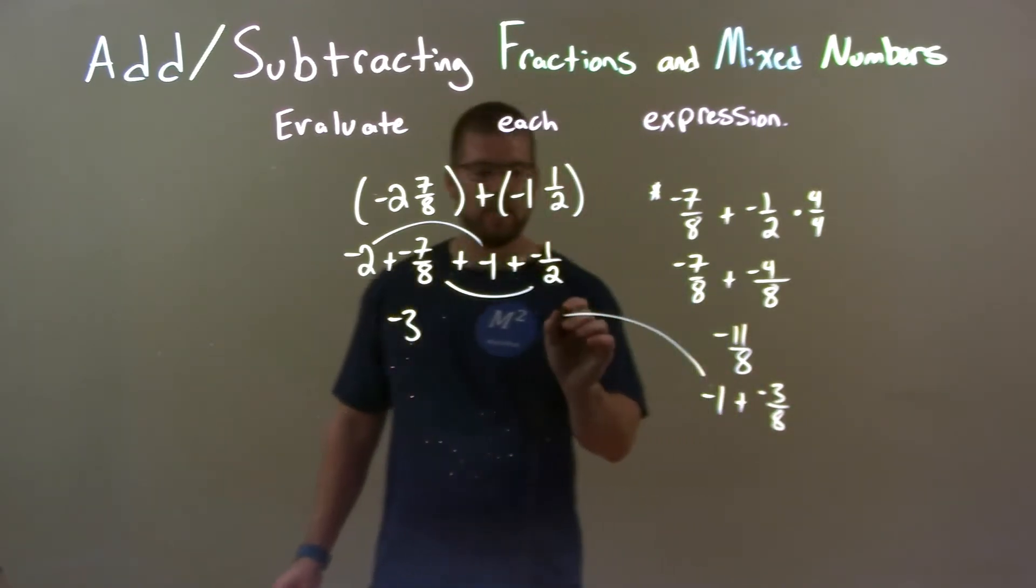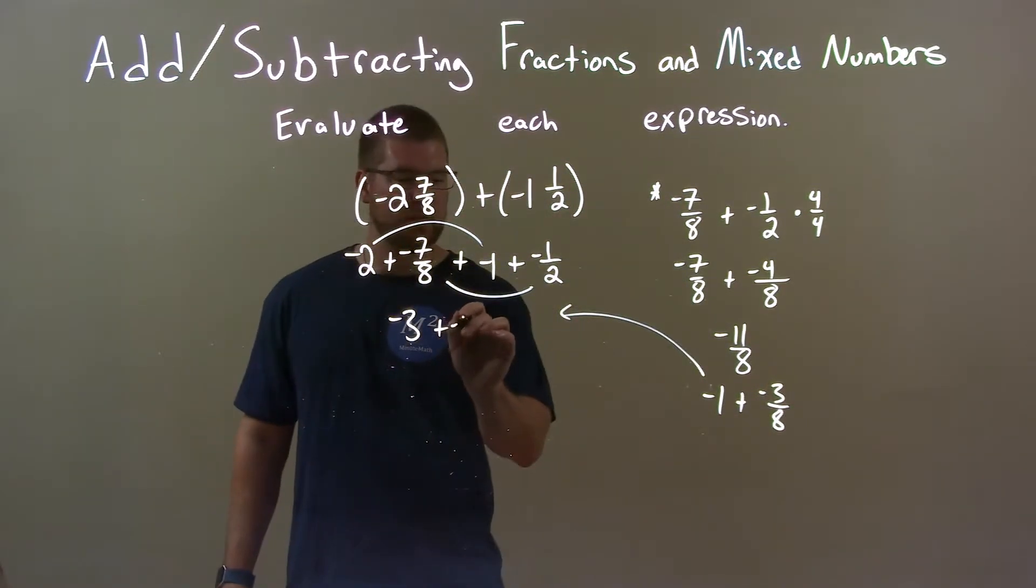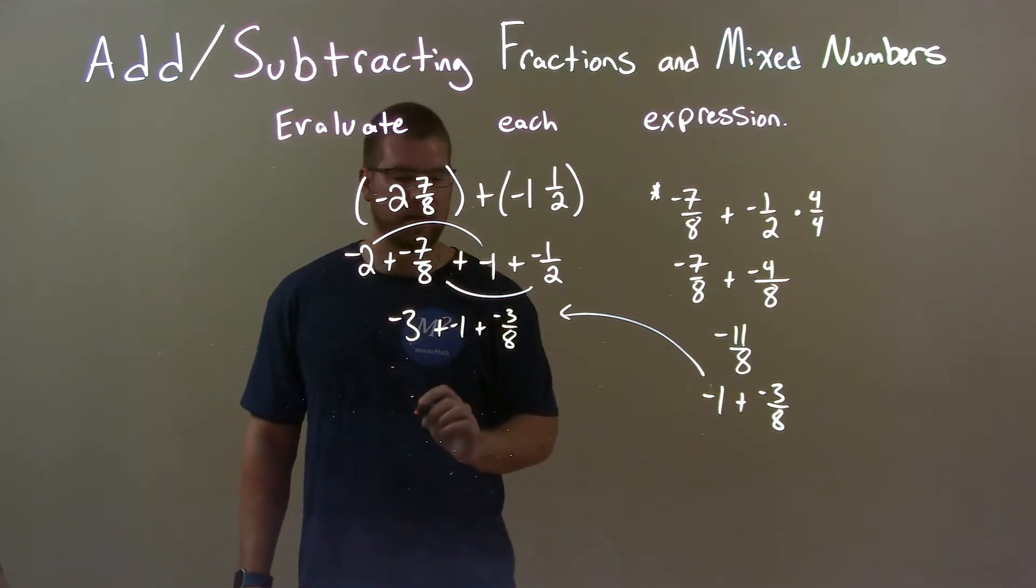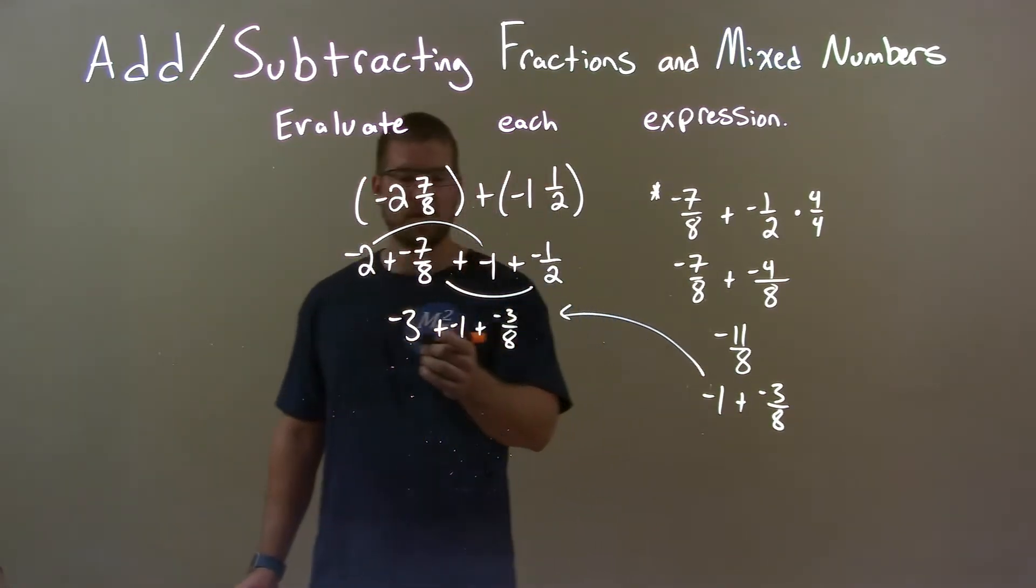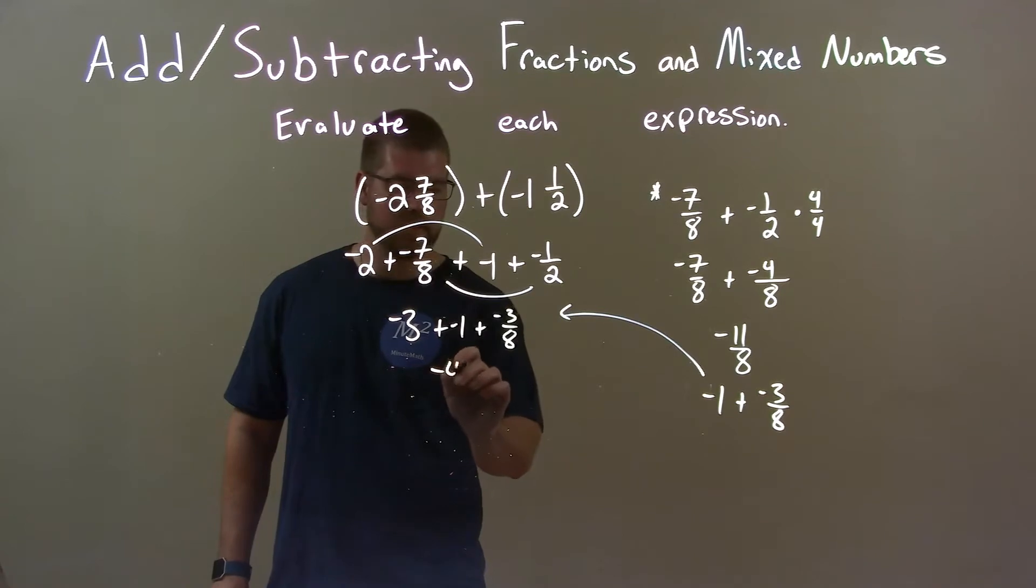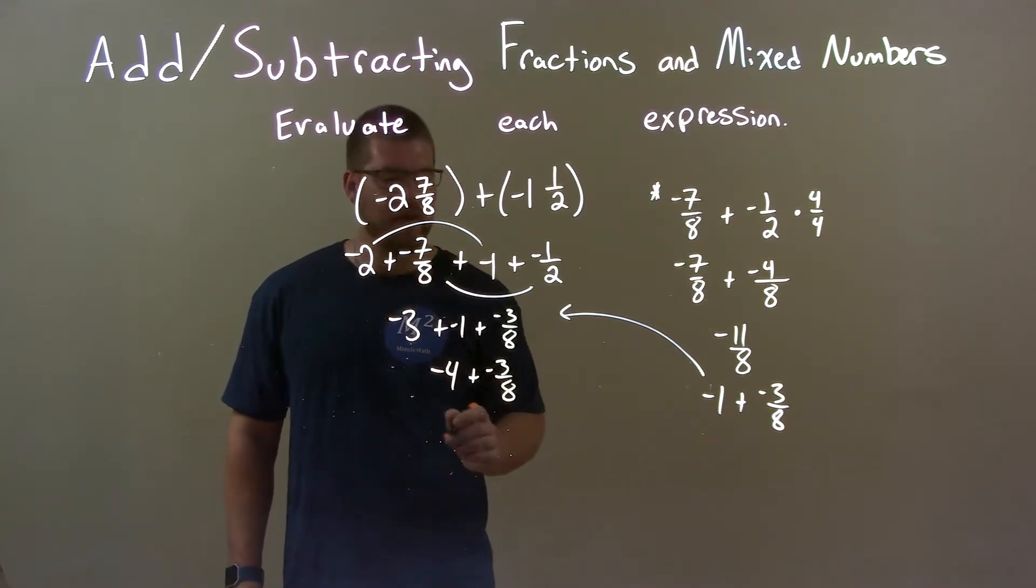So now, I'm going to bring that over here. Plus a negative 1 plus a negative 3 eighths. Now, let's combine the whole numbers again. We have negative 4 plus a negative 3 eighths.